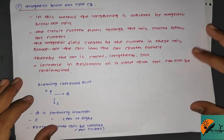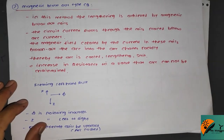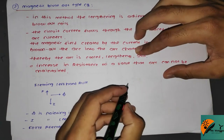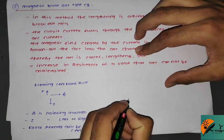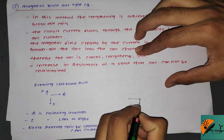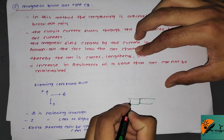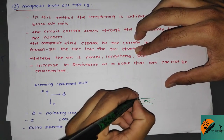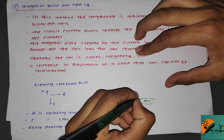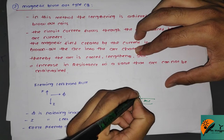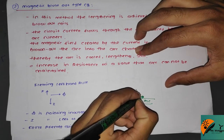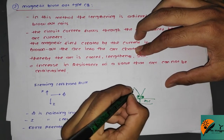Another type is the magnetic blowout circuit breaker. In this method, the lengthening of the arc is achieved by magnetic blowout coils. In this circuit breaker, there are fixed and moving contacts, and from the coil you can see the arc runs here.